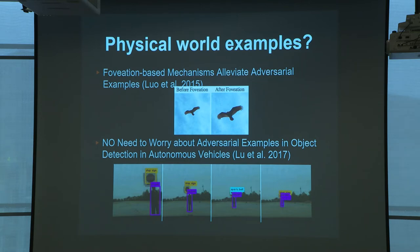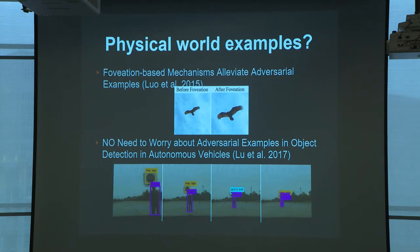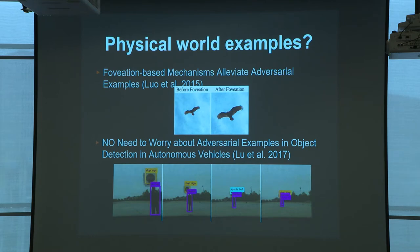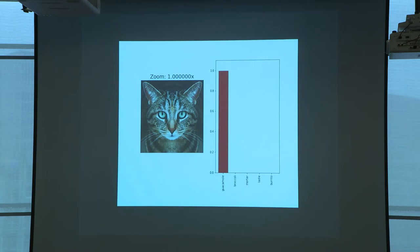On the other hand, papers from 2015 and 2017 argued that adversarial examples exist, but once you zoom in or do some translation to the image, they're no longer adversarial. In a self-driving car scenario passing a stop sign, the sign is adversarially identified as a sports ball only in one particular frame. Once you drive past it or are at a slightly different angle, it no longer looks adversarial — it depends on a particular arrangement of pixels. The conclusion was a confident 'no need to worry about adversarial examples in object detection for autonomous vehicles.' As we showed, that's not the case — you can generate adversarial examples robust to translations and transformations.